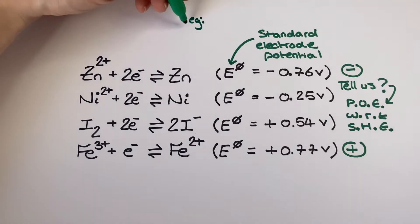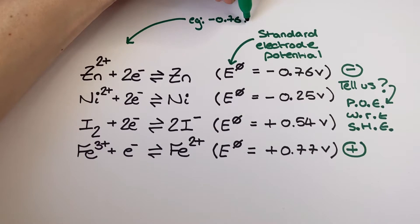Now the more negative standard electrode potential half equations have a position further to the left hand side and the more positive standard electrode potential half equations have a position further to the right hand side.